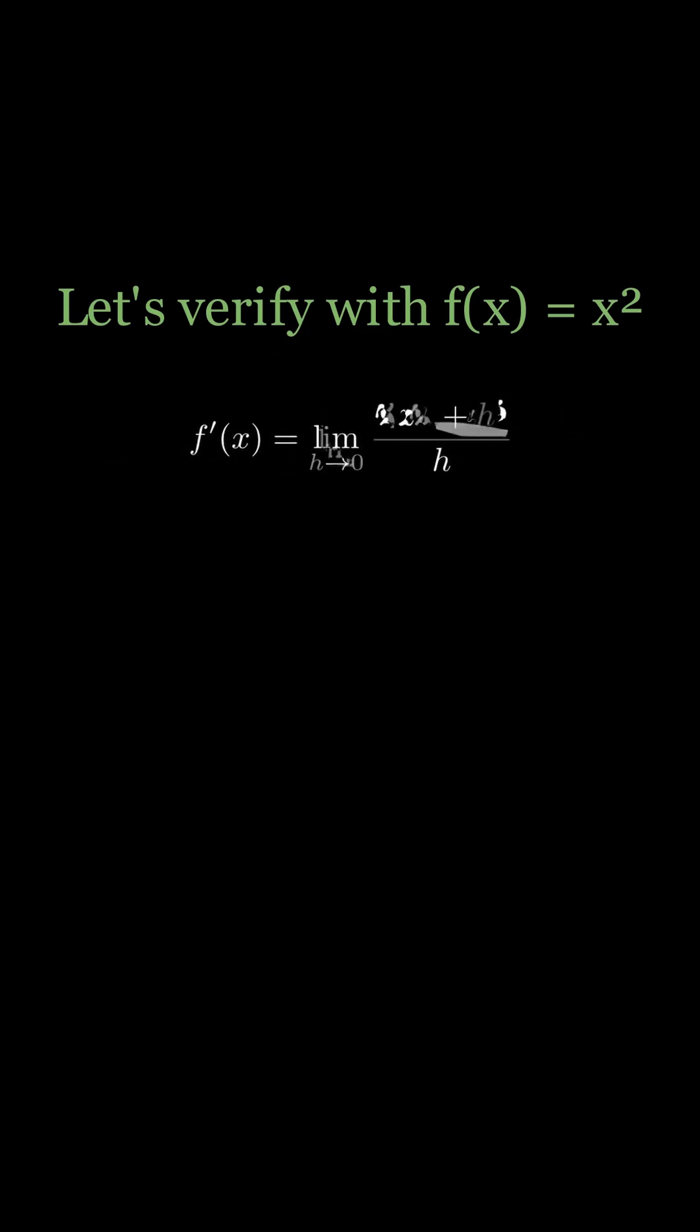Factor out the h, we're left with this, and then cancel out the h's from the numerator and denominator. After plugging in zero for h, we're left with f'(x) equals 2x, and if we evaluate f'(1), we get 2, which matches what we got from analyzing our graph of x squared.